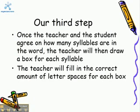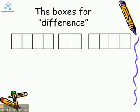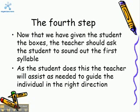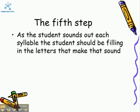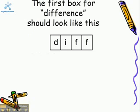The teacher will fill in the correct amount of letter spaces for each box. The boxes for 'difference' should look like this. Now that we have given the student the boxes, the teacher should ask the student to sound out the first syllable. As the student does this, the teacher will assist as needed to guide the individual in the right direction. As the student sounds out each syllable, the student should be filling in the letters that make that sound. The first box for 'difference' should look like this.